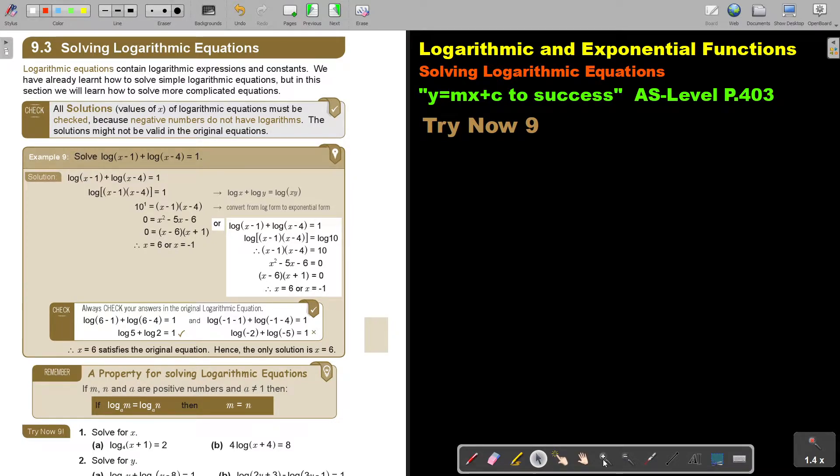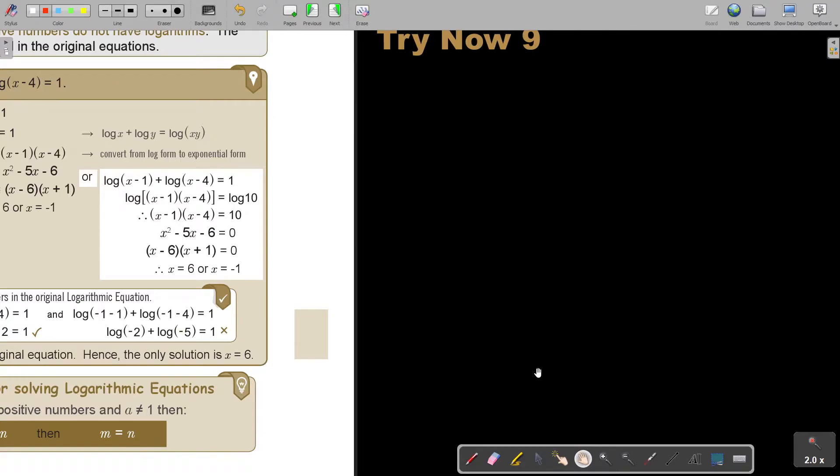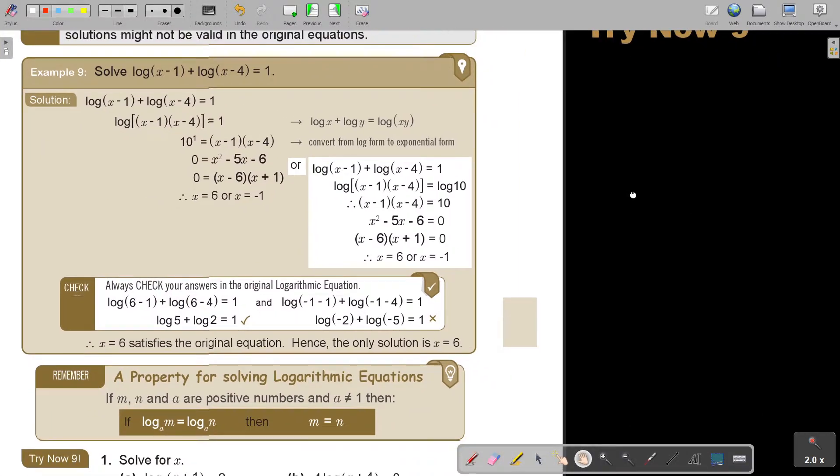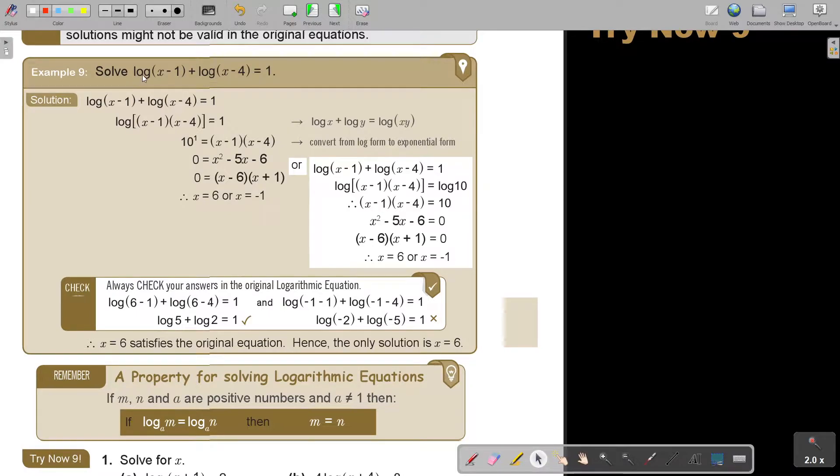Let's look at example 9. Again, I'm going to make it a bit bigger. Do we see better? Okay. Here it is. Solve log bracket X minus 1, plus log bracket X minus 4, equals 1.